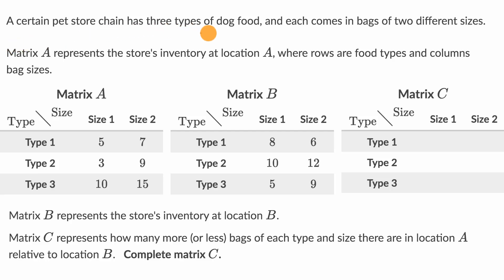A certain pet store chain has three types of dog food, and each comes in bags of two different sizes. Matrix A represents the store's inventory at location A, where rows are food types and columns are bag sizes.